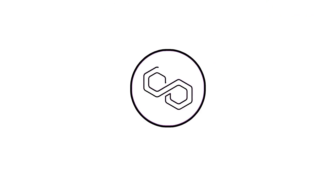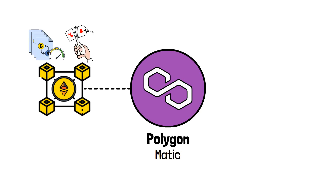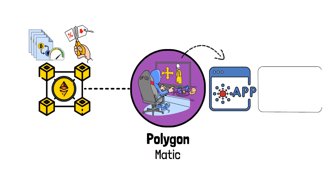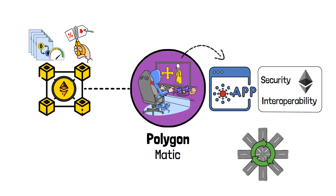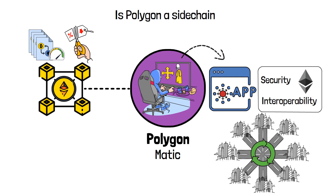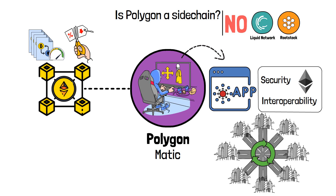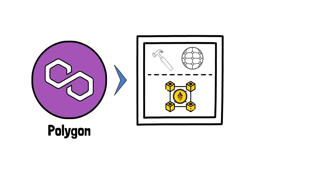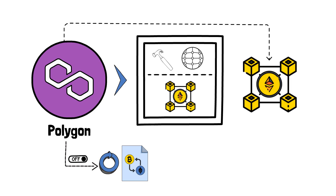Lastly, we have Polygon, formerly known as Matic. It stands out by providing Ethereum-compatible blockchain networks with the benefits of faster and cheaper transactions. Polygon has become a bustling hub for developers, enabling them to build scalable, user-friendly dApps with the security and interoperability of Ethereum's main chain. But here's a twist — is Polygon a sidechain? The answer is actually no. Unlike Liquid and Rootstock, Polygon is better described as a layer-2 scaling solution that works on top of the Ethereum blockchain to improve its performance, rather than creating a separate new chain.